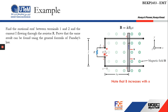We want to find the motional EMF between terminals 1 and 2 and the current i flowing through resistor R, then prove the same result can be found using Faraday's law. Only the part that crosses the magnetic field generates motional EMF. The fixed rails and the fixed segment 1 to 2 do not generate motional EMF. The motional EMF is generated only by segment 3 to 4 as it moves across the magnetic field. Since segment 3 to 4 is parallel to segment 1 to 2, the induced voltages are the same.